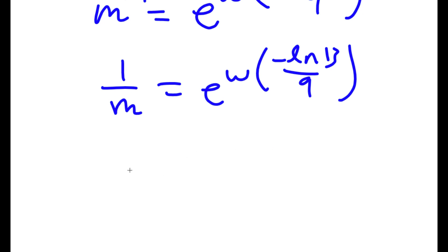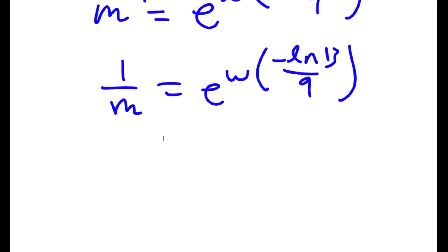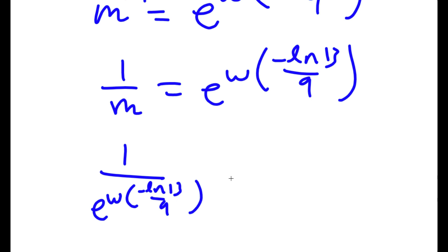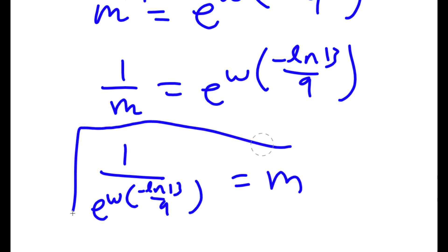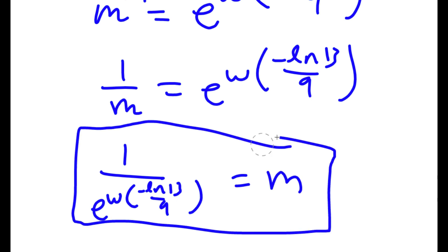So m to the power of negative 1 is equal to e to the power of W of negative ln 13 over 9. And that is our answer.